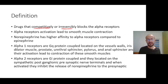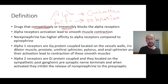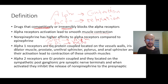Alpha receptor activation leads to smooth muscle contraction — this is a general fact. This is in comparison with beta receptors, which give us smooth muscle relaxation. Another important fact is that norepinephrine has a higher affinity to alpha receptors compared to epinephrine, while epinephrine has more affinity to beta receptors.